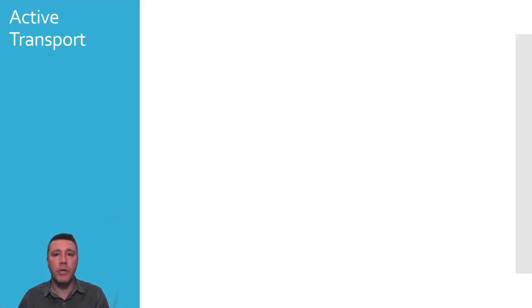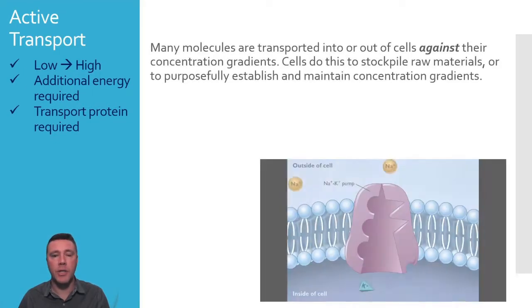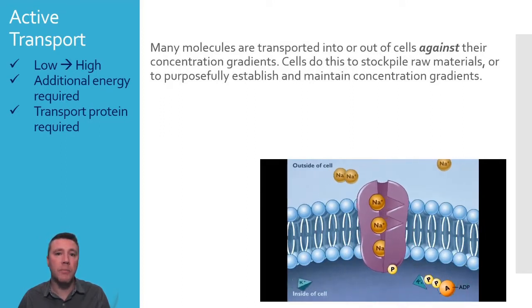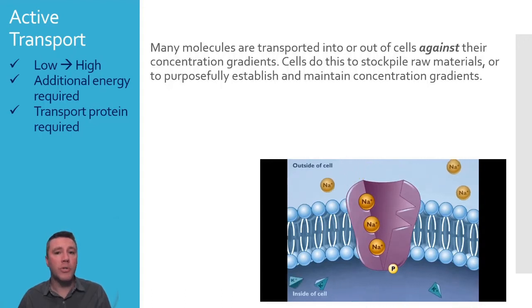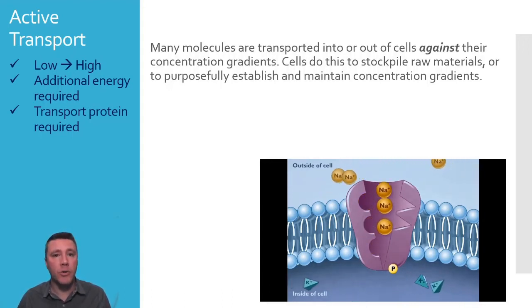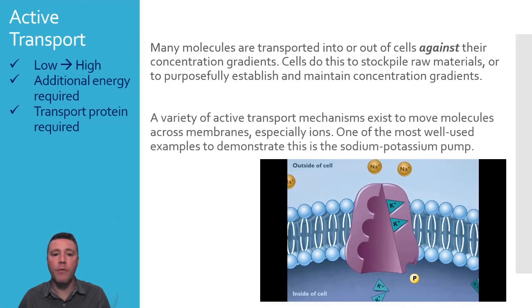Many molecules are transported across cell membranes against their concentration gradients, from an area of low concentration to an area of high concentration. Cells may do this to stockpile raw materials like glucose and amino acids, or to establish and maintain concentration gradients of ions on either side of the membrane. Although there are a variety of transport mechanisms to accomplish this, one of the most well-studied and well-known examples is the sodium-potassium pump.